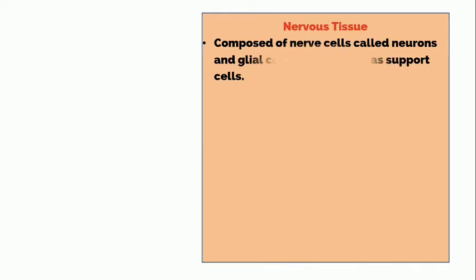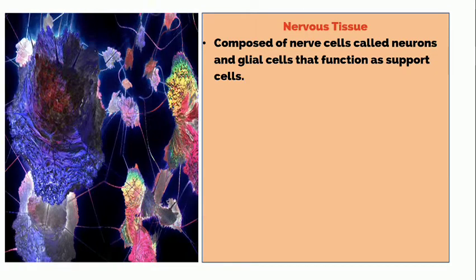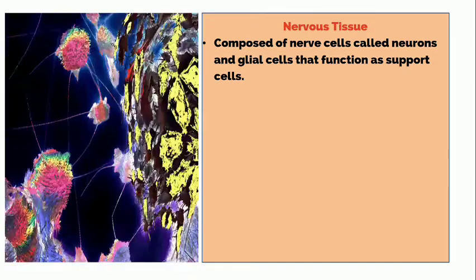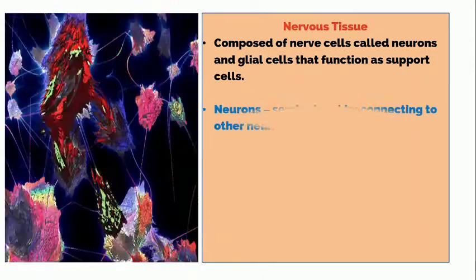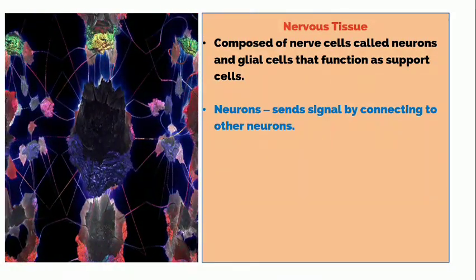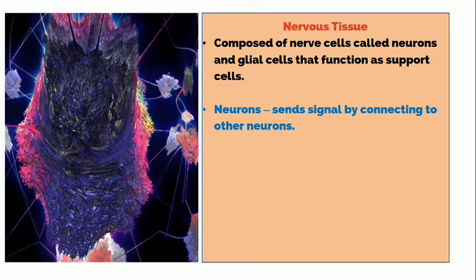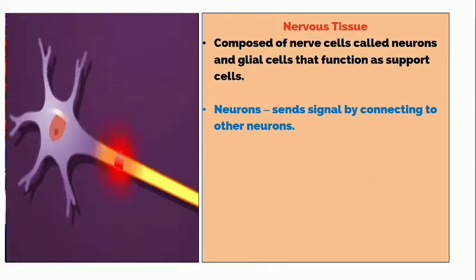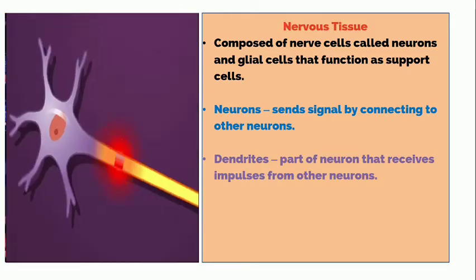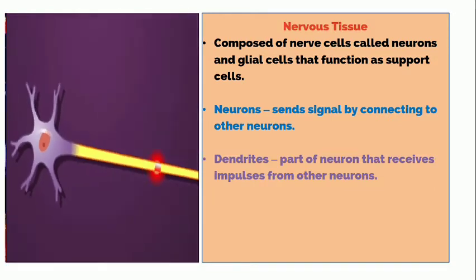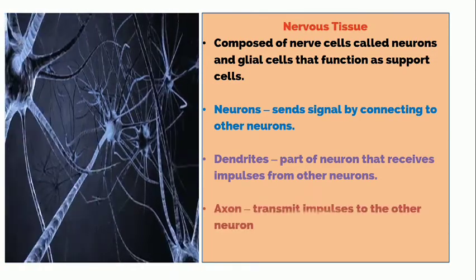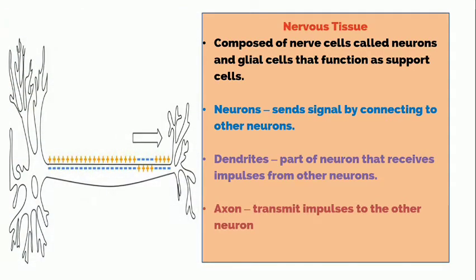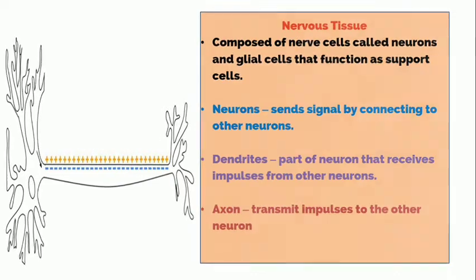Nervous tissue is composed of nerve cells called neurons and glial cells that function as support cells. Neurons send signals by connecting to other neurons, transmitting stimuli and electrical signals through the animal body. Dendrites are the part of the neuron that receives impulses from other neurons. The axon transmits impulses to other neurons.